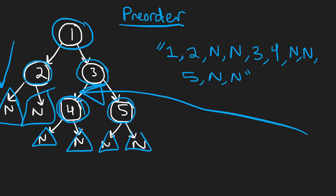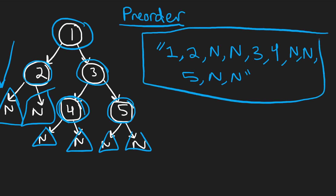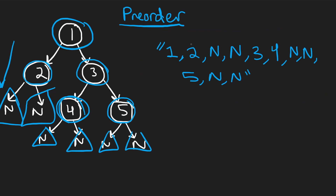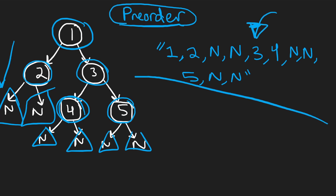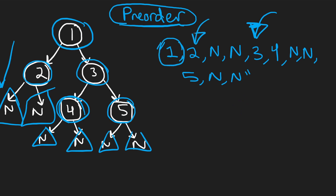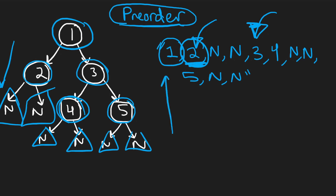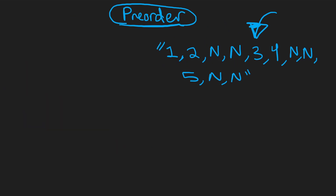Now, can we take this string and know exactly which is the left node and which is the right? We're going to use pre-order traversal on this string to create a new tree, and I'll show you it's not ambiguous. Clearly, one is the root. The next value must be the left child — if it were null, one would have no left subtree, but it's not null, so two is the left child of one. Then two's left child is null, and its right child is also null.